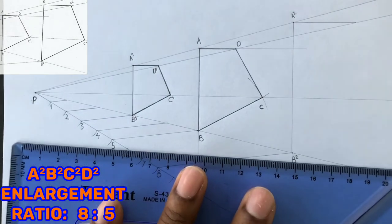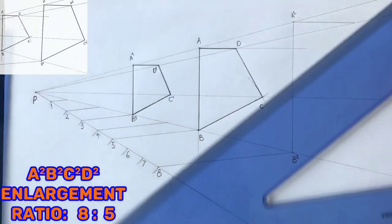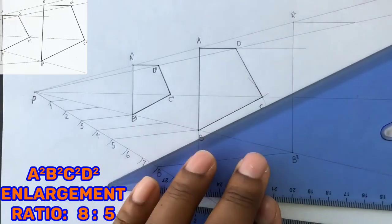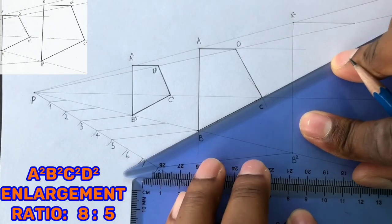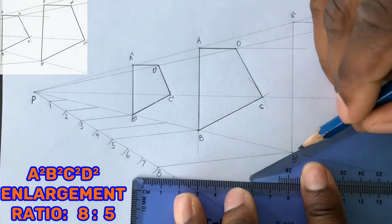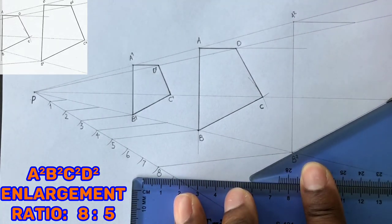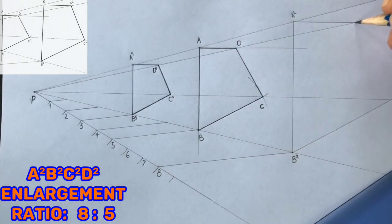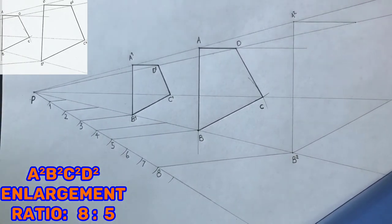Now from point B2, draw a parallel line that is parallel to line BC. Now label this intersection as D2.